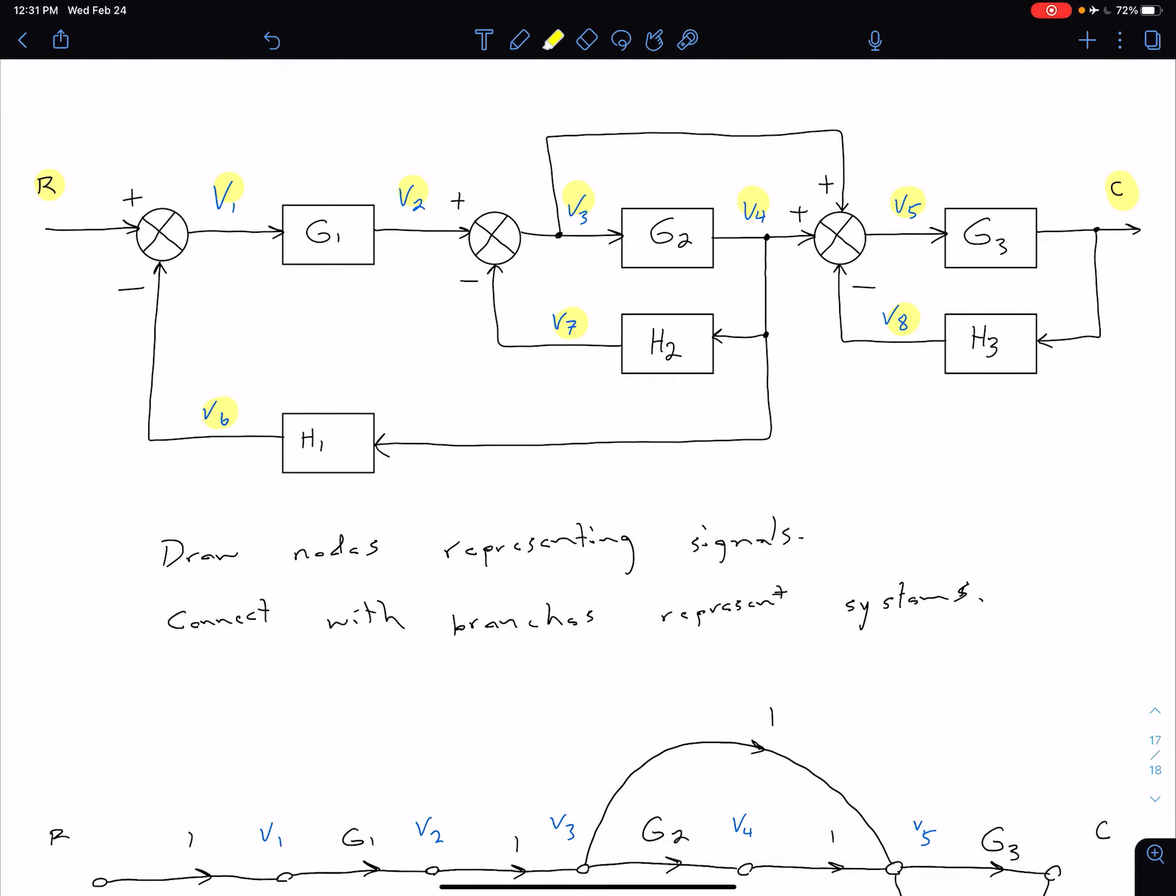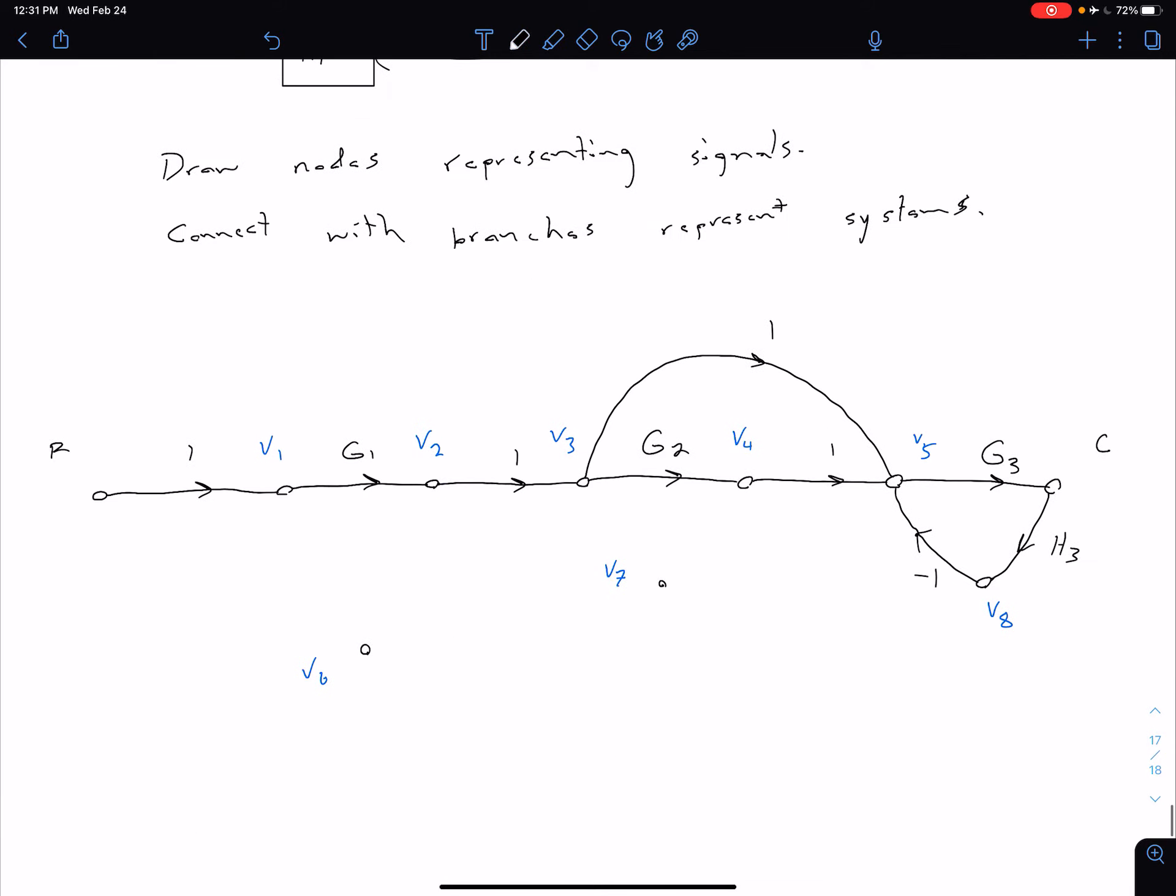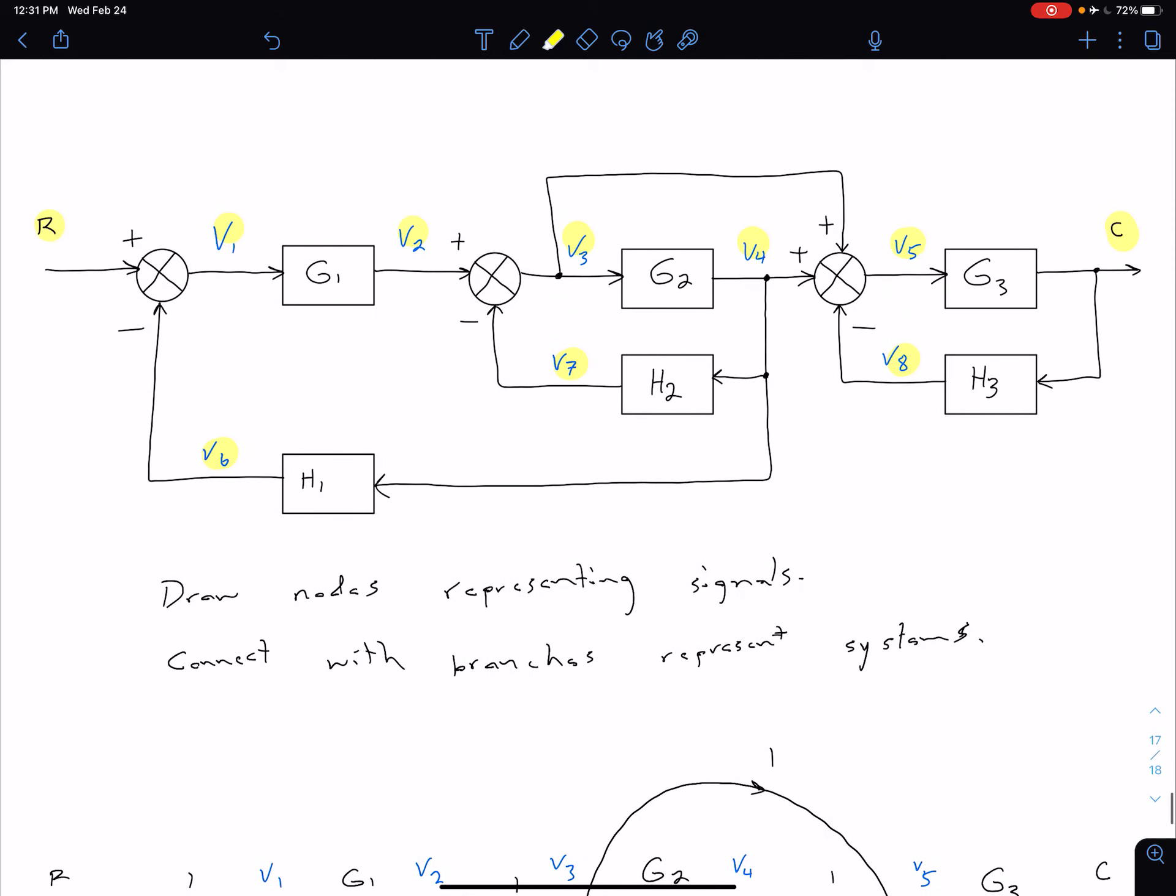So similar ideas for our other two feedback loops. So we see to get from V4, which is right here, to V7, we just multiply by H2. So from V4 to V7, we multiply by H2.